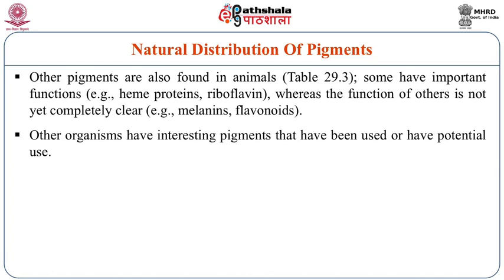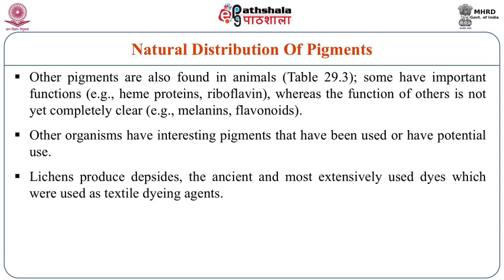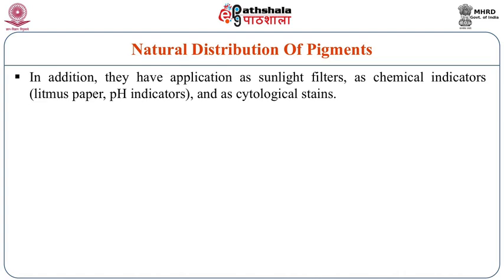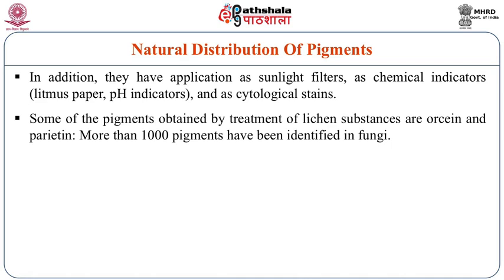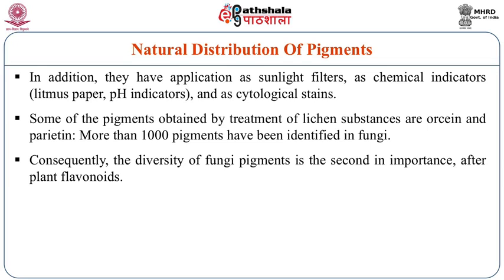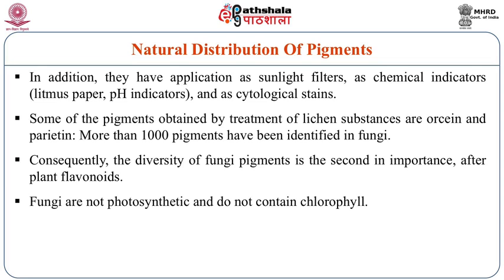Other organisms have interesting pigments that have been used or have potential use and applications. Lichens produce depsides, the ancient and most extensively used dyes which were used as textile dyeing agents. In addition, they also have application as sunlight filters and as chemical indicators — for example, in preparation of litmus paper and pH indicators — and also as cytological stains used in microbiological experiments. Some of the pigments obtained by treatment of lichen substances are ocarine and paritine. More than 1,000 pigments have been identified in fungi; consequently, the diversity of fungi pigments is second in importance after the plant flavonoids. Fungi are not photosynthetic and do not contain chlorophyll.